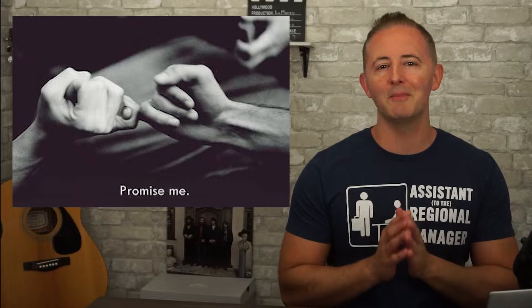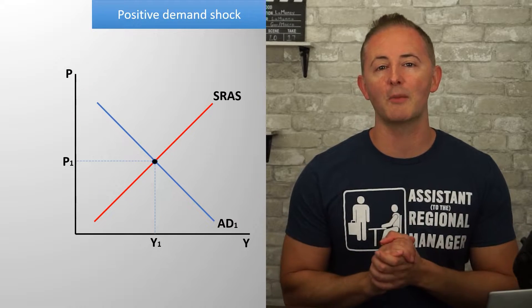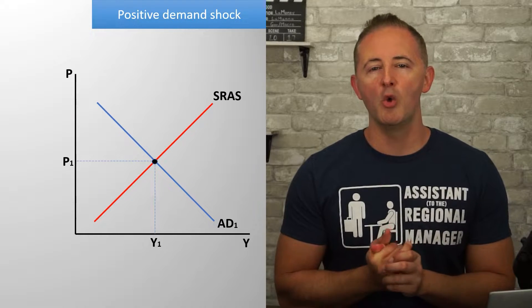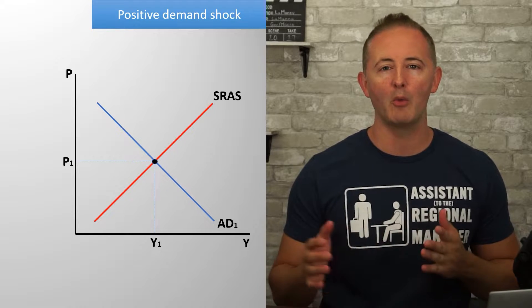So yeah, we're going to shift the AD and SRAS curves in this video. And since we're only concerned with the short run in this lesson, I'm going to go ahead and make the executive decision to leave the LRAS curve out of this one — I think it would just be distracting. But promise me that you'll keep in mind that when you draw this model, you're pretty much always going to have to draw the LRAS curve as well. Okay, so here we are starting at a point of short run equilibrium. We'll label our initial price level P1 and our initial level of output Y1.